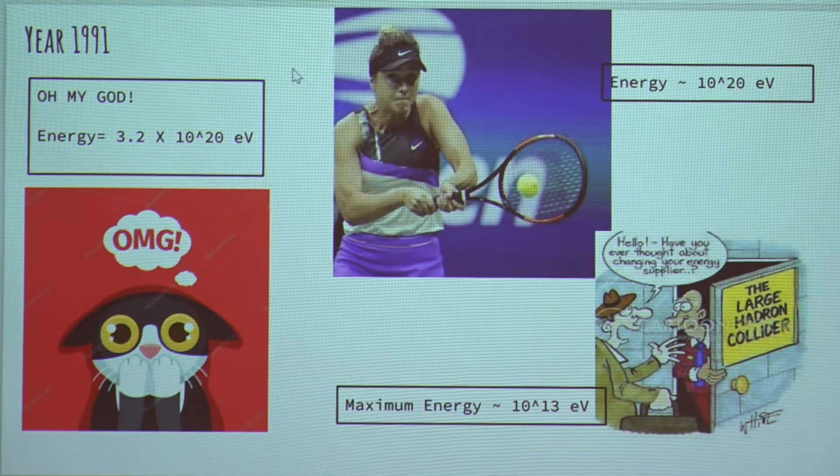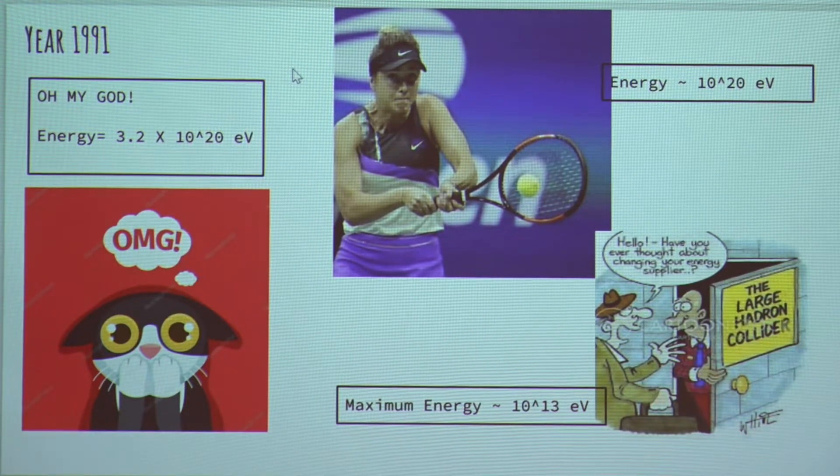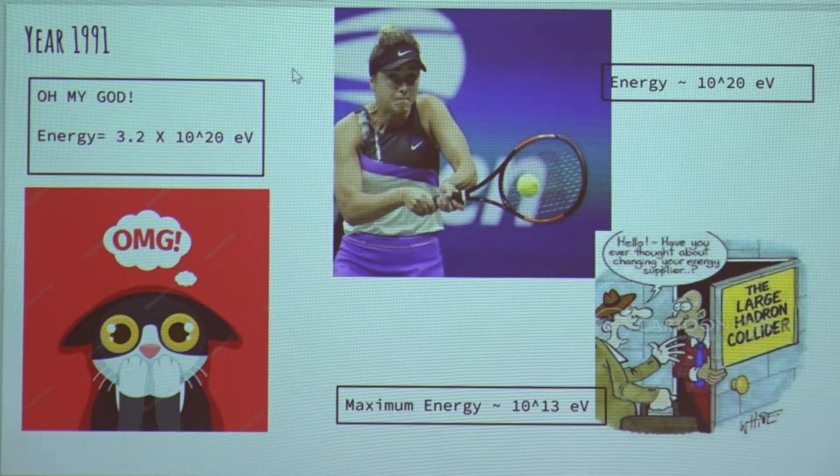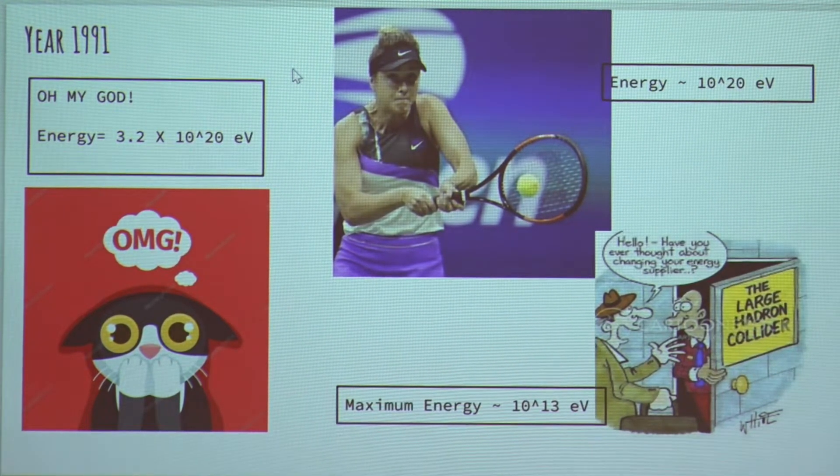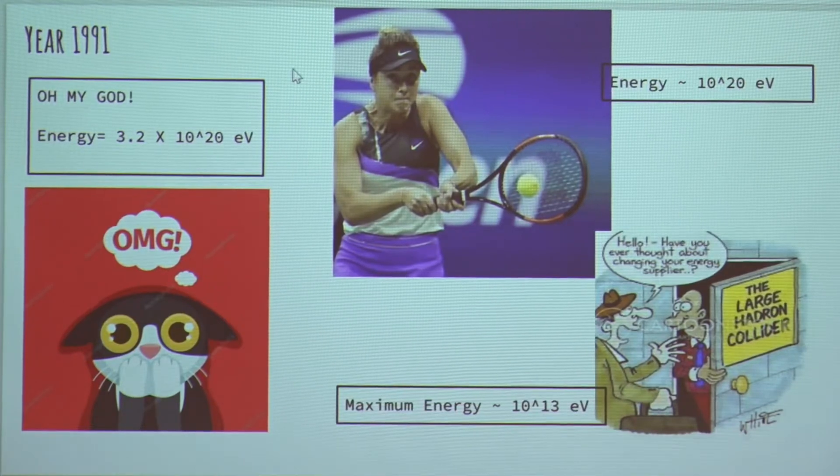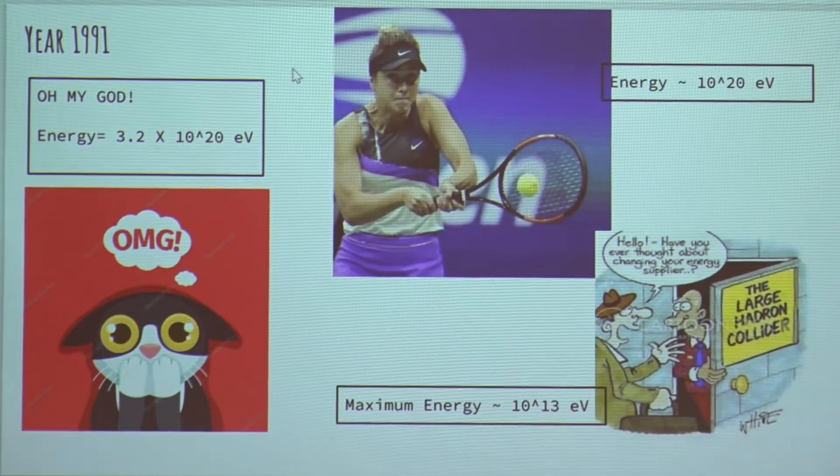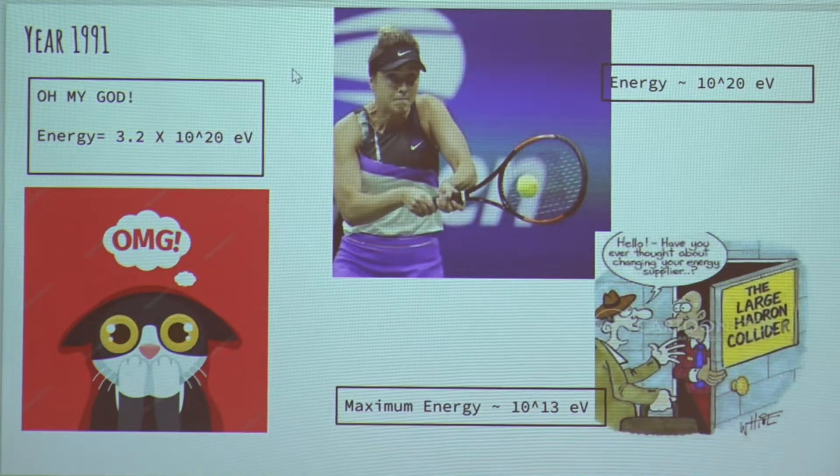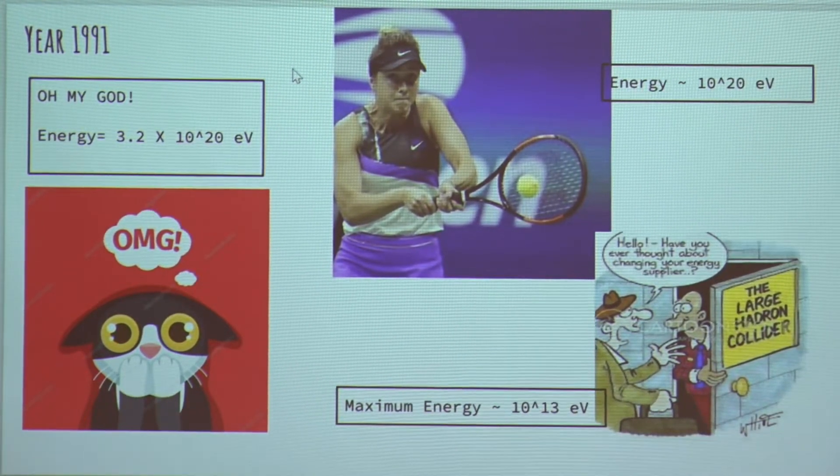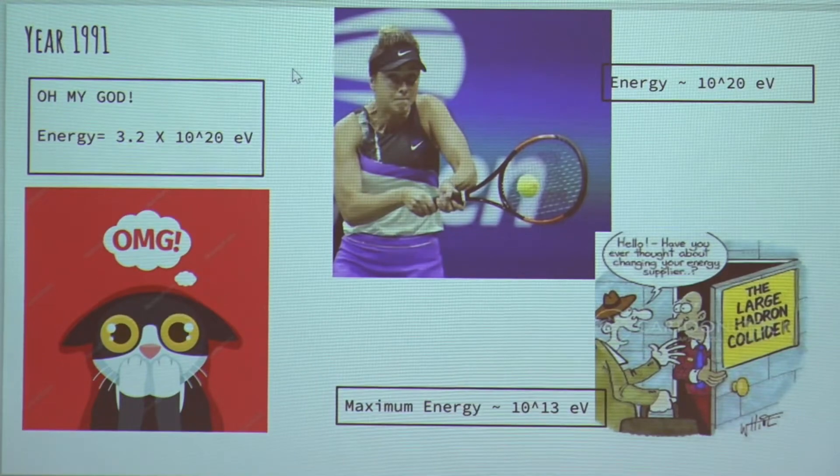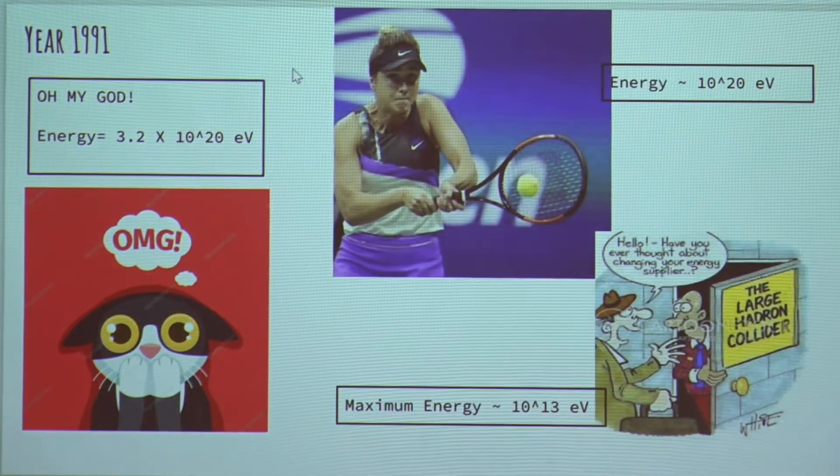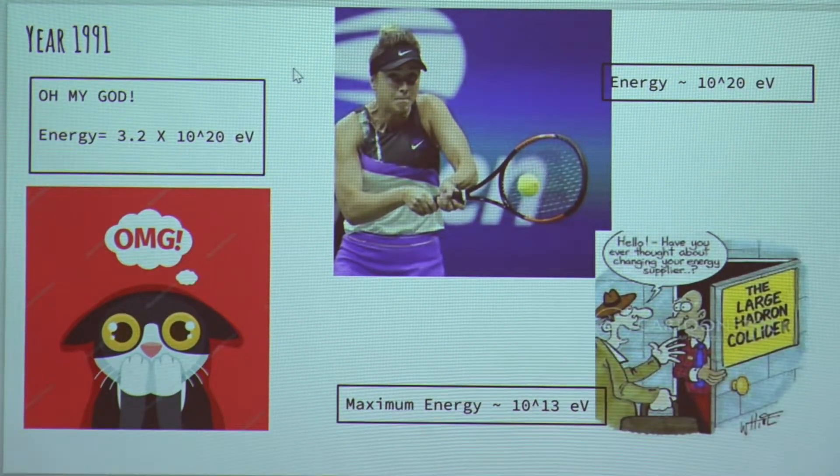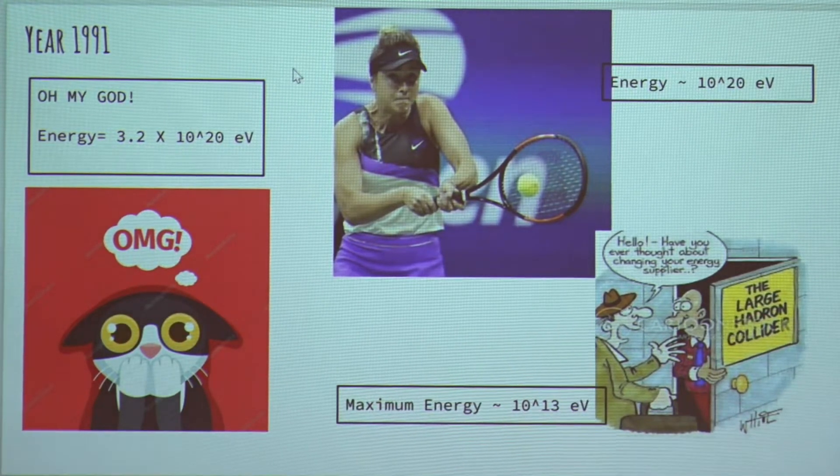So to give you an idea of how huge this energy is, this is the energy a tennis ball would have if it was hit by all the might of a professional tennis player. Now just imagine all that energy squeezed into just one tiny atom. And a tennis ball might have 10 raised to about 20 of such atoms.